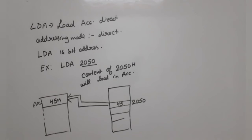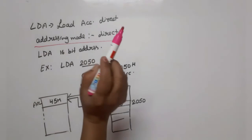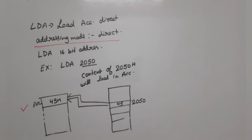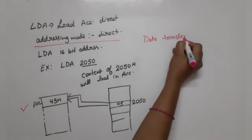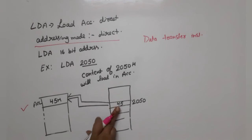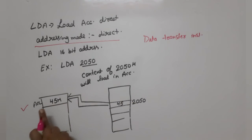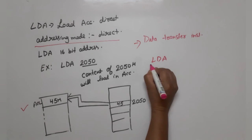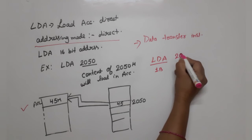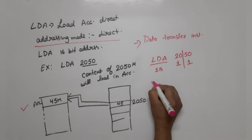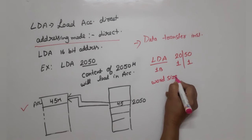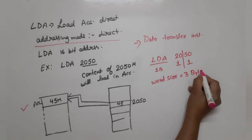The addressing mode for LDA is direct addressing mode. This is a data transfer instruction because data from the given memory location is being transferred to the microprocessor. The word size: LDA has one byte for the opcode, and the address 2050H is 16 bits — one byte for the lower part, one byte for the upper part. So the word size of this instruction is 3 bytes.